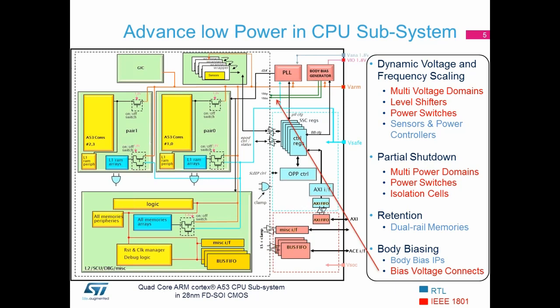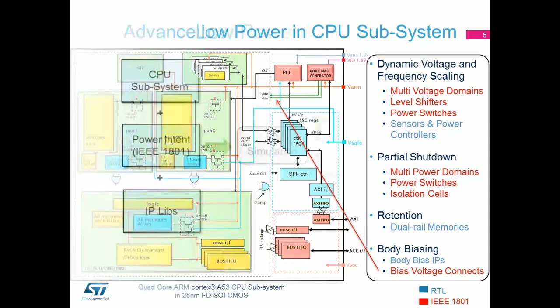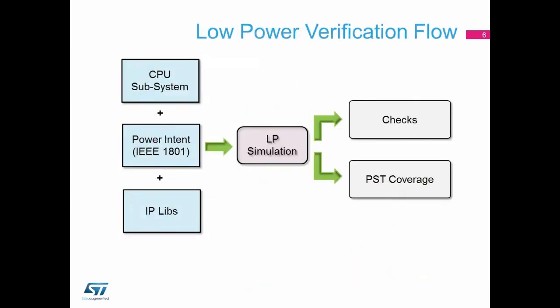The key takeaway is that to achieve low power functionality we have multiple new IPs — like body bias generators and OPP controllers — embedded inside the RTL. Second, we need power intent information, where the IEEE 1801 infrastructure proves very handy, as we define all power intent using that. Third, we need IPs like memory and PLLs to carry power information alongside their behavioral models.